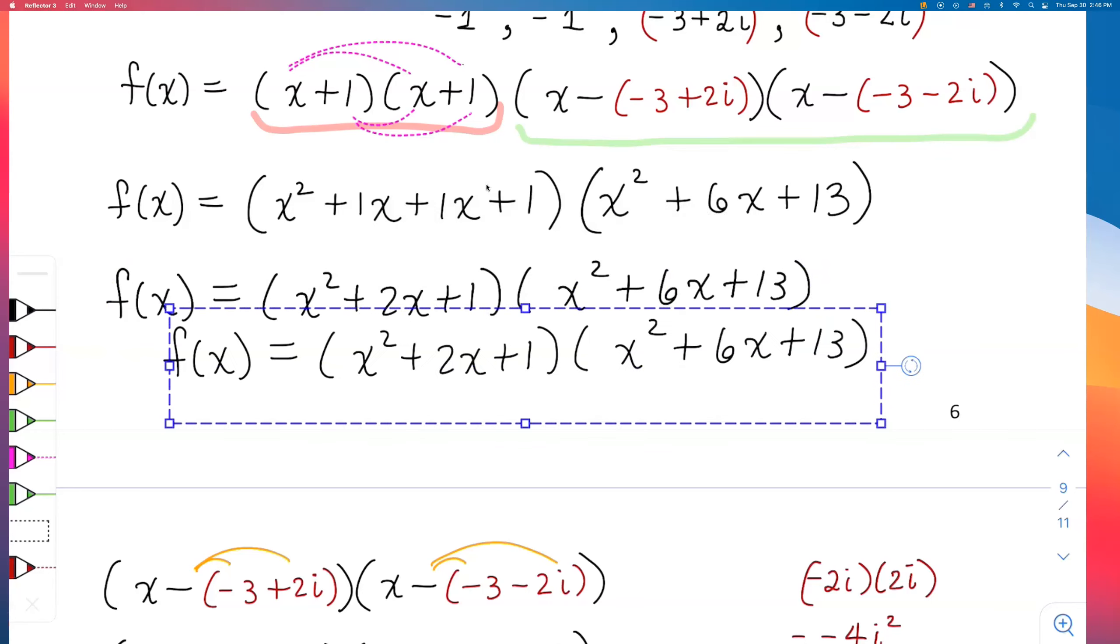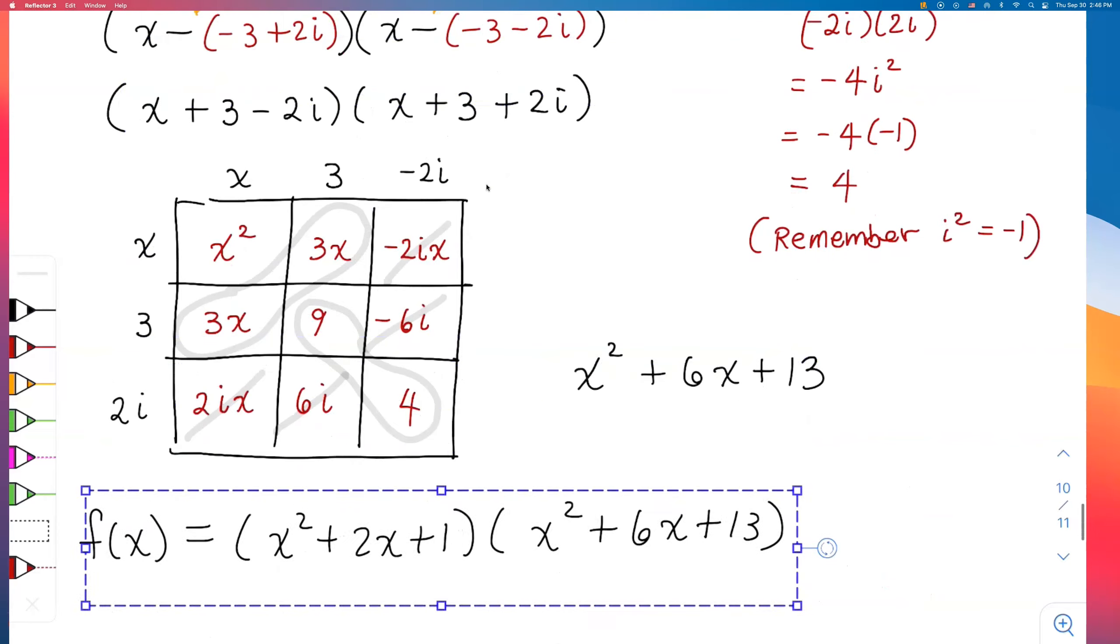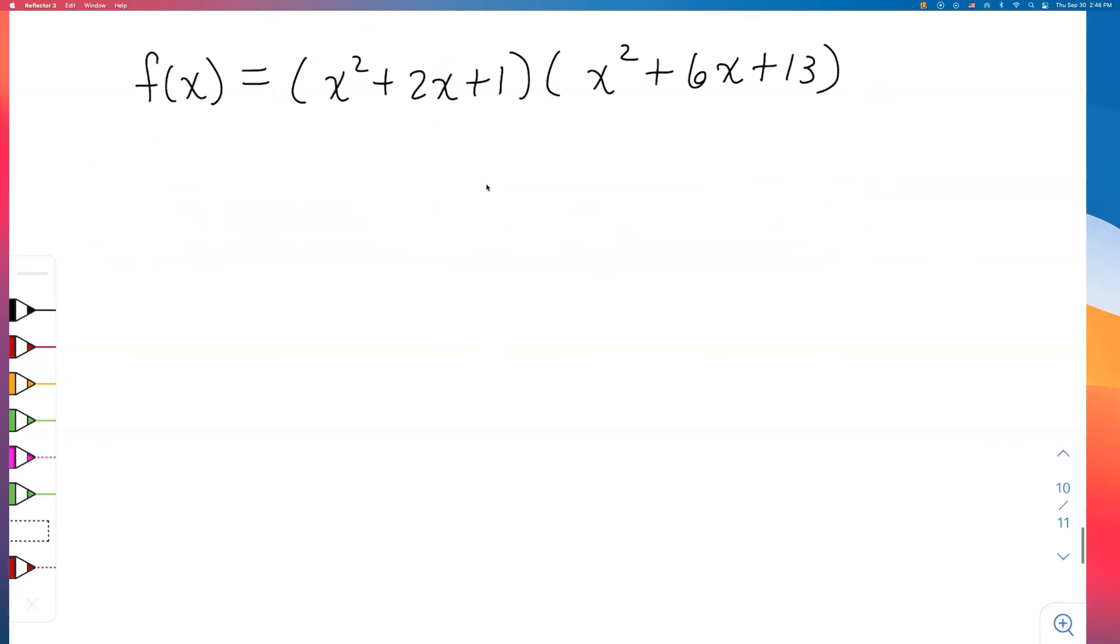Let me duplicate this and bring it down on the other page. So I'm doing a trinomial times a trinomial. I'm going to do another box to multiply 3 by 3. Or you can FOIL if you want: x², 2x, 1, x², 6x, and 13. Alright, let me multiply.